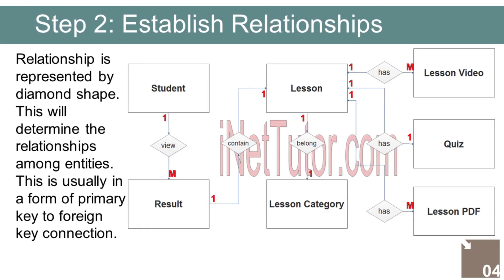After we have specified our entities, it is time now to connect or establish a relationship among the entities. 1. Student view their scores for every lesson, one-to-many relationship. 2. A lesson belongs to a specific lesson category, one-to-one relationship. 3. A lesson contains multiple videos, one-to-many relationship. 4. A lesson contains multiple PDF files, one-to-many relationship. 5. Every lesson has an assessment in a form of quiz, one-to-one relationship.